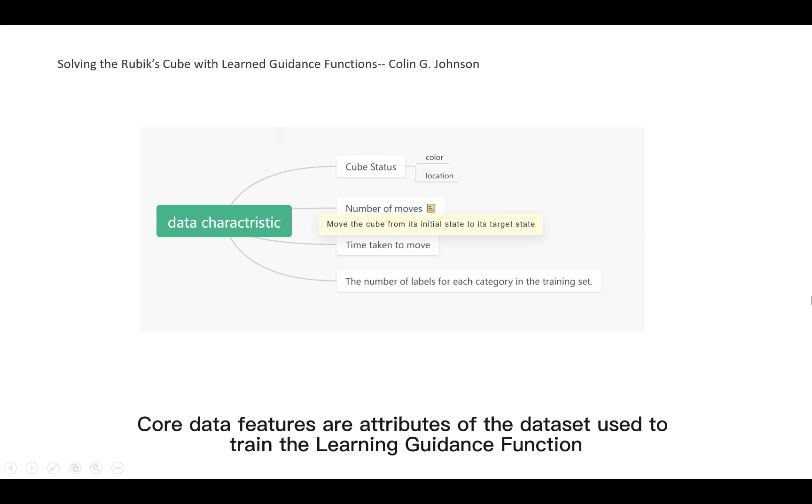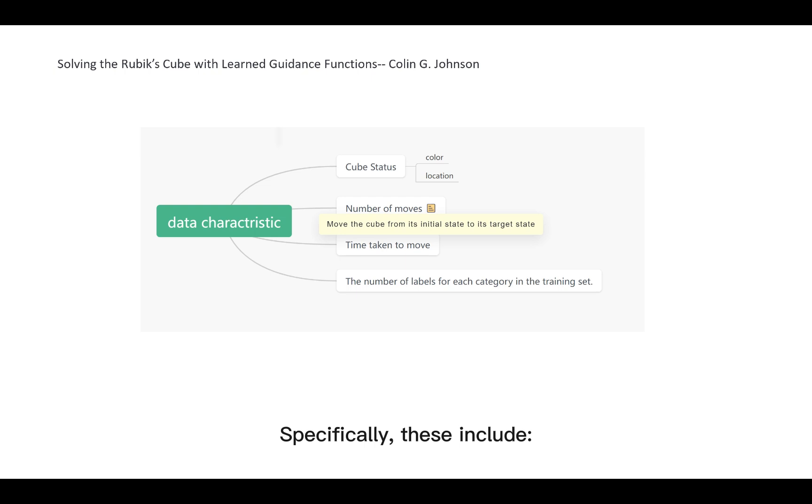Core data features are attributes of the data set used to train the learning guidance function. Specifically, these include cube state, which includes information about the color and position of the Rubik's Cube blocks.